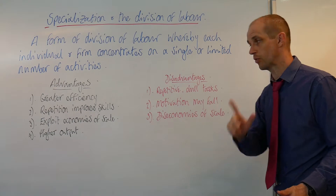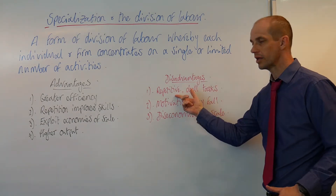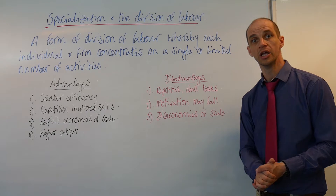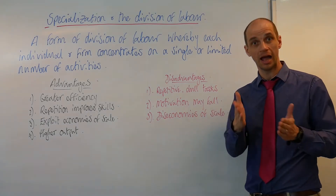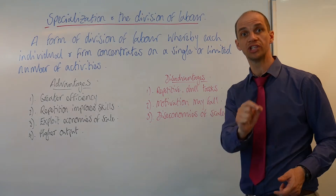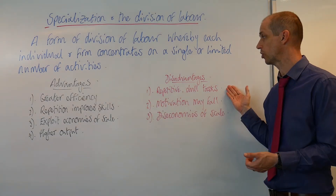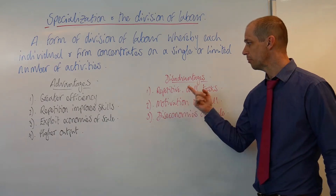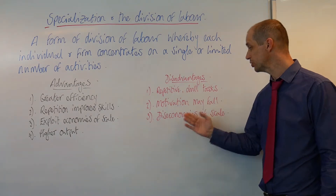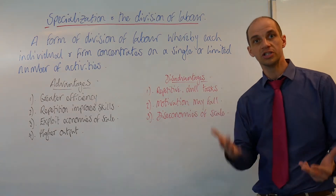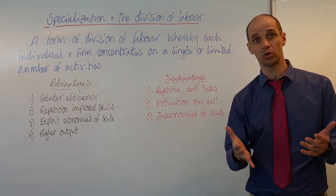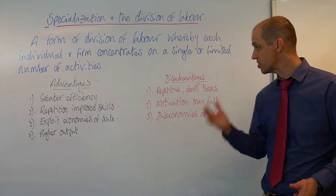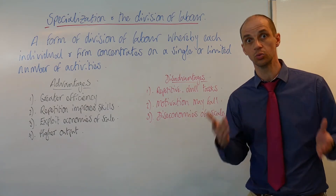The disadvantages, however, are fairly significant. The tasks involved can be repetitive, dull, and very monotonous in their approach. As such, it may be appropriate to use job rotation, where you actually rotate people along a production or assembly line to alleviate some of that repetitive nature of the task. Moreover, as a result of that repetition, motivation may fall, and when workers become demotivated, that is what is known as a diseconomy of scale — where output increases but average cost begins to rise because workers are less motivated to work as hard.